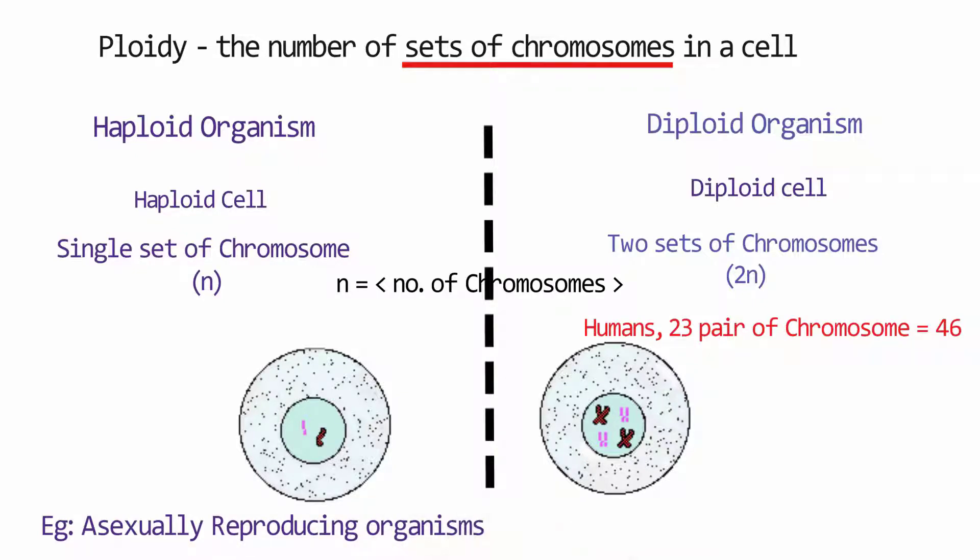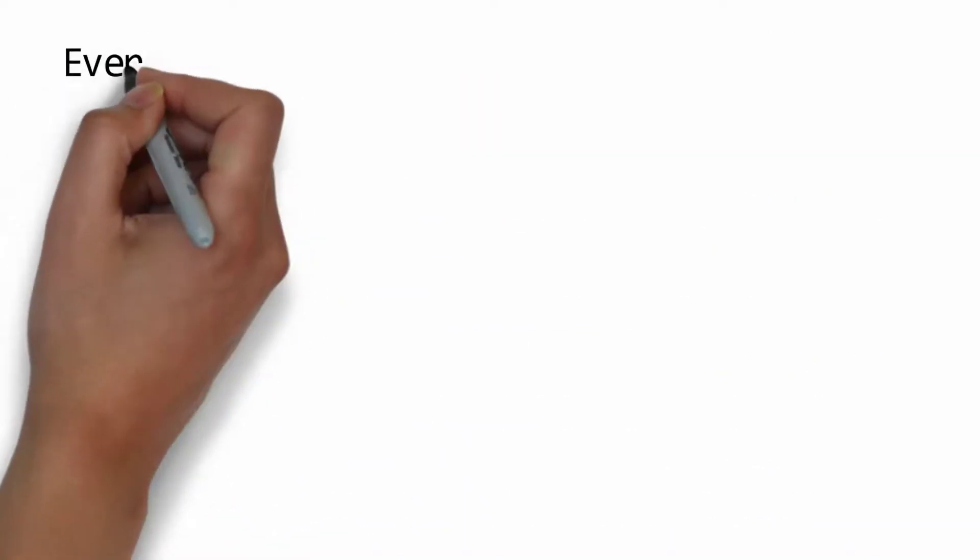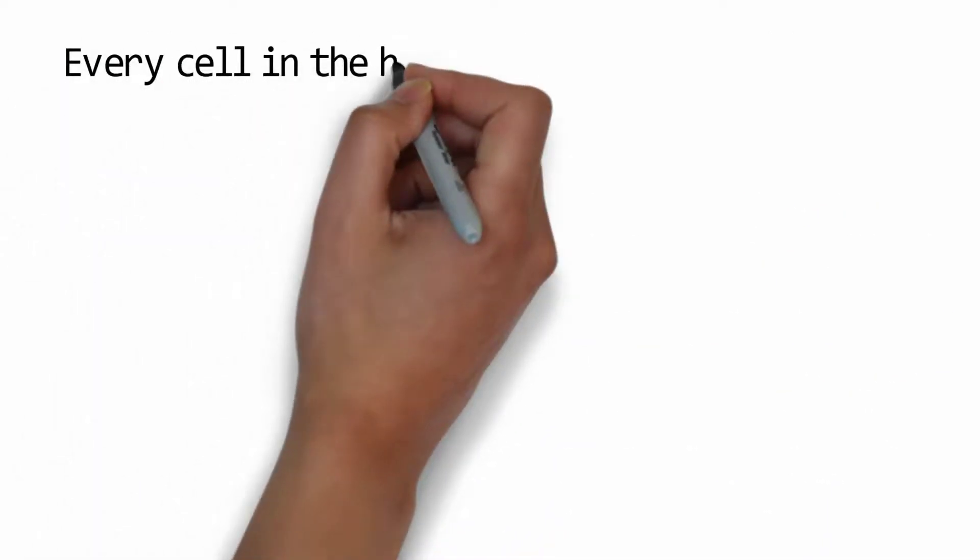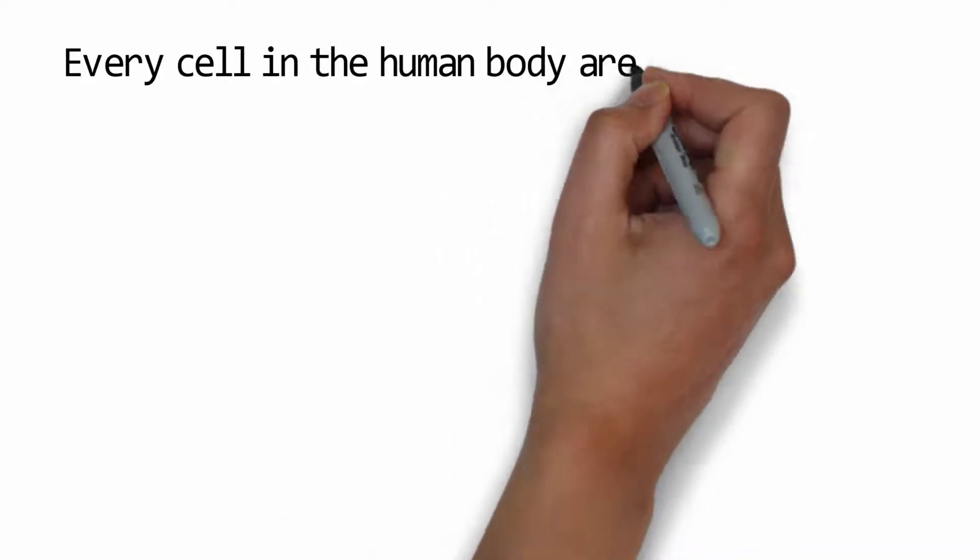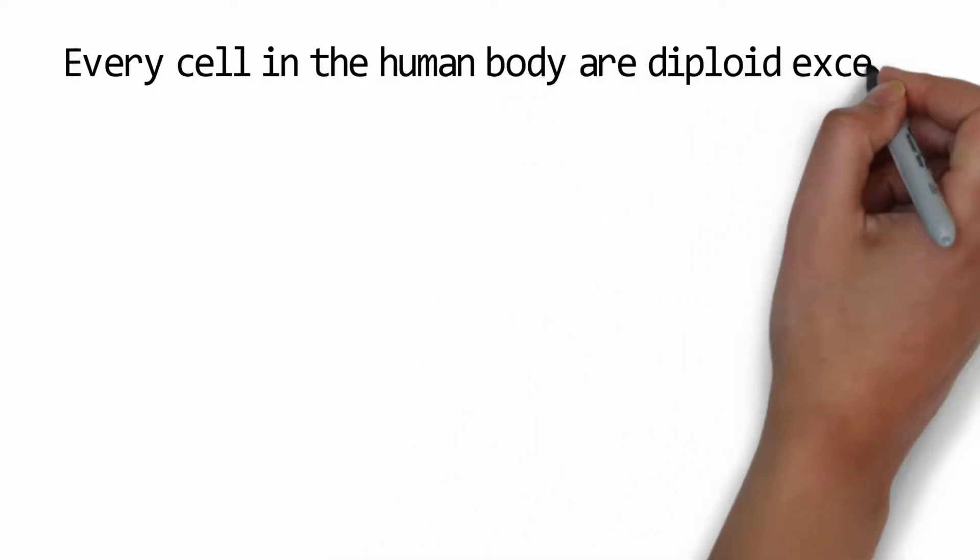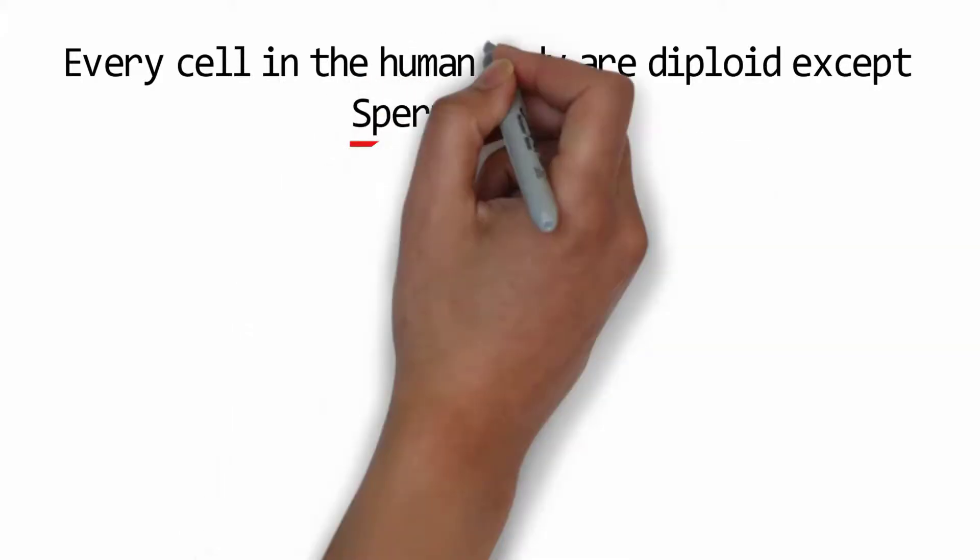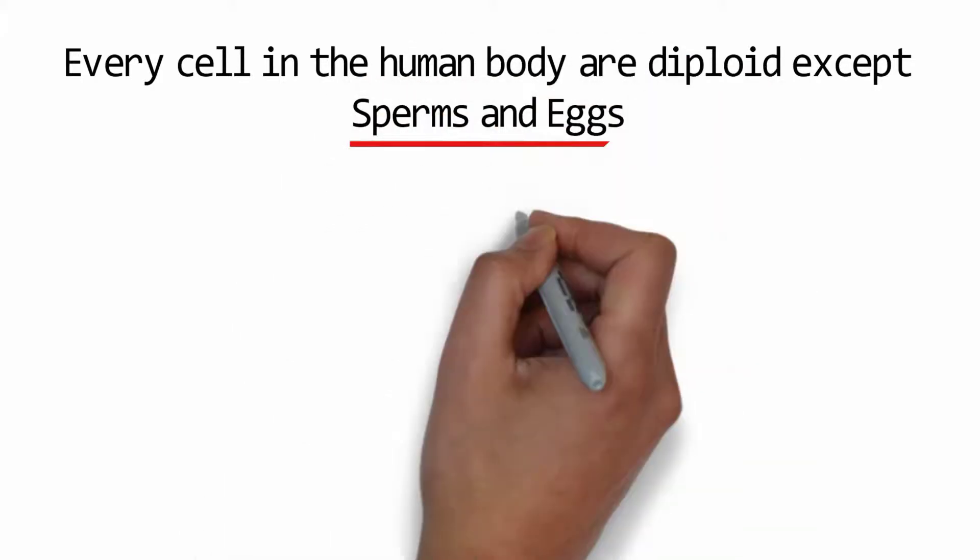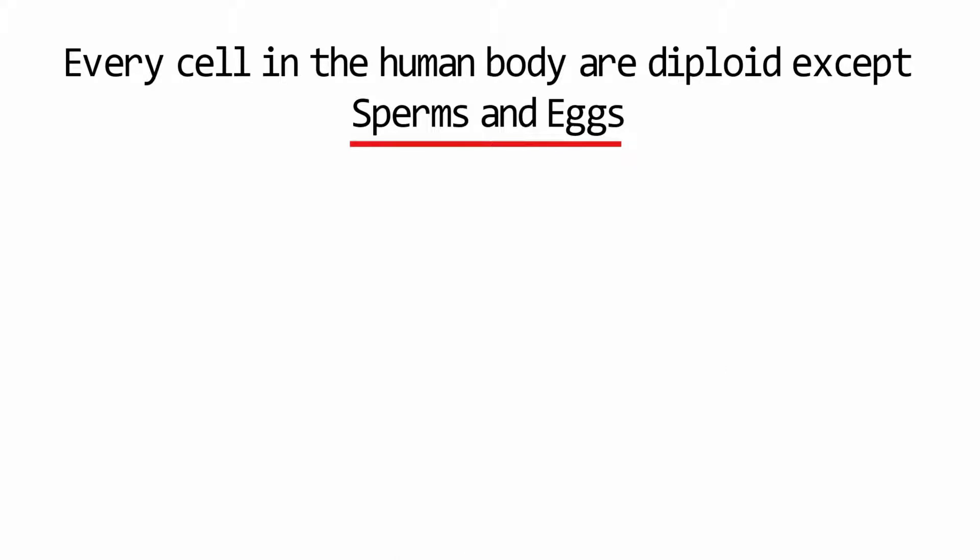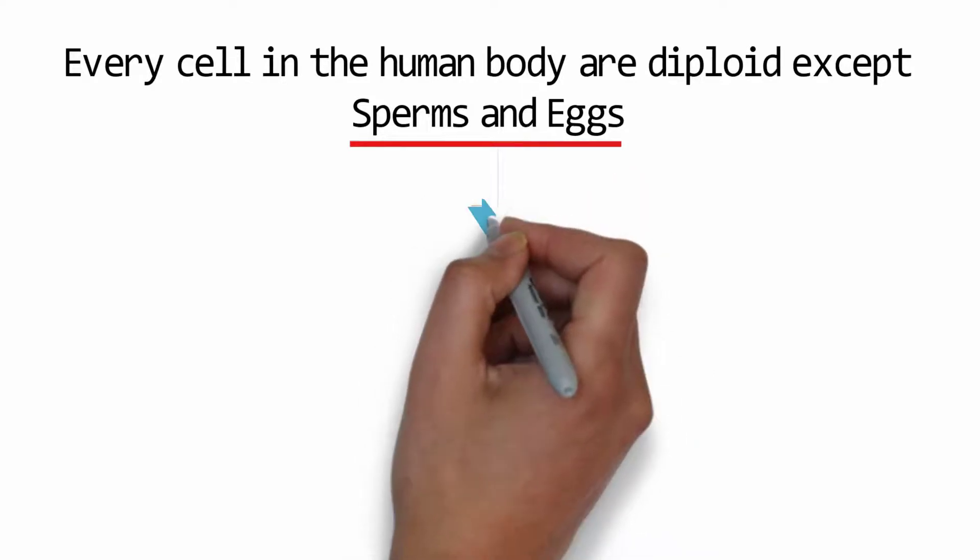Haploid organisms are usually asexually reproducing organisms while diploid organisms are sexually reproducing organisms like humans. Now every cell in the human body is diploid except sperm and eggs. But why? We have to know the reason why sperm and eggs are haploid in number.